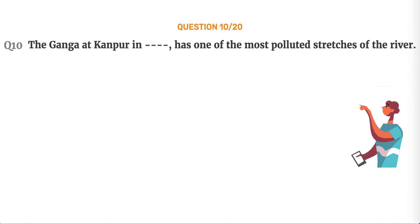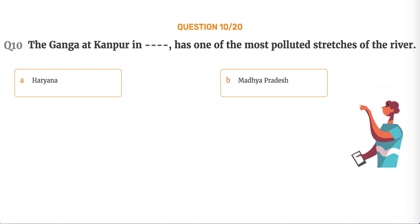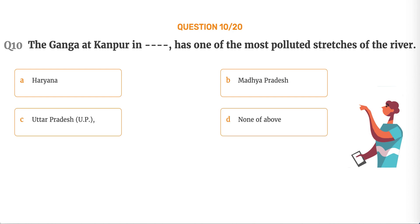Question number 10. The Ganga at Kanpur in dash has one of the most polluted stretches of the river. Option A, Haryana. Option B, Madhya Pradesh. Option C, Uttar Pradesh. Option D, None of the above.